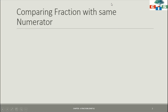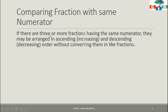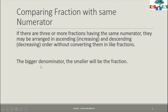First of all, comparing fractions with same numerators — how to compare fractions if we have same numerators. If there are three or more fractions having the same numerators, they can be arranged in ascending or descending order without converting them into like fractions. The key point is that the bigger the denominator, the smaller will be the fraction, when numerators are the same.